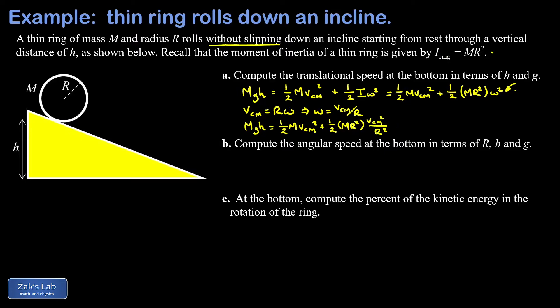At this point the r squareds cancel out. This means the translational velocity of the ring at the bottom of this incline doesn't depend on the radius of the ring. In addition the masses cancel out. So it doesn't depend on the mass of the ring either.